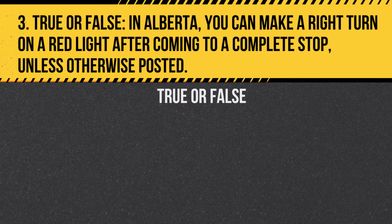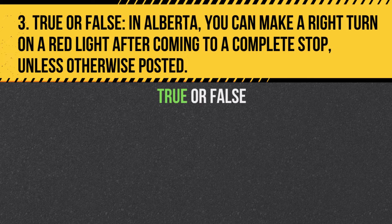Question 3. True or false: In Alberta, you can make a right turn on a red light after coming to a complete stop, unless otherwise posted. Answer: True. You can make a right turn on a red light after stopping, unless a sign indicates that it is not allowed.